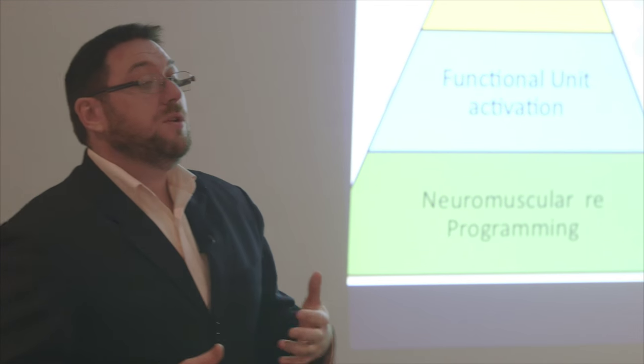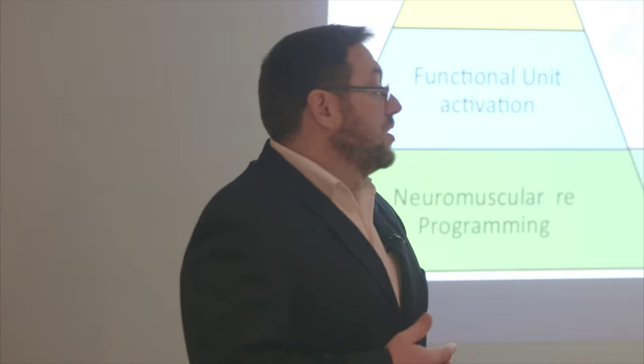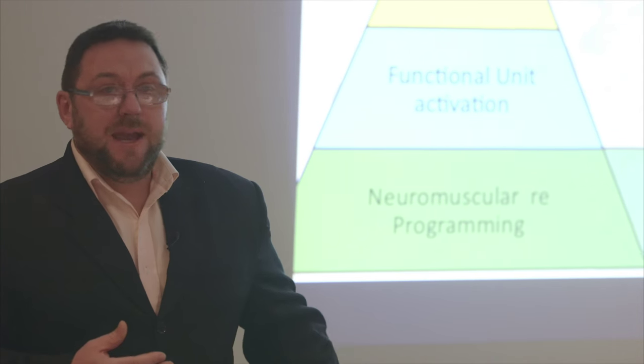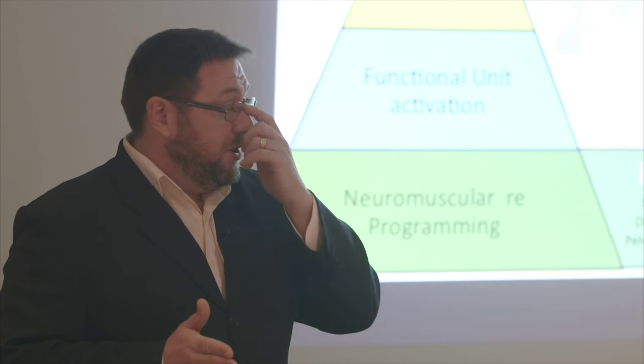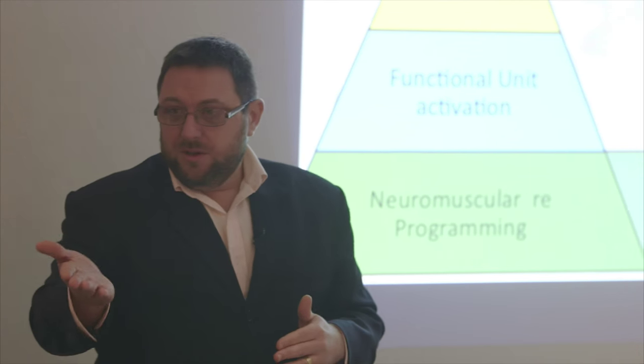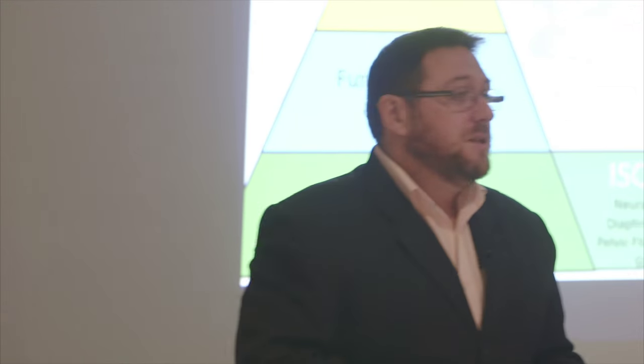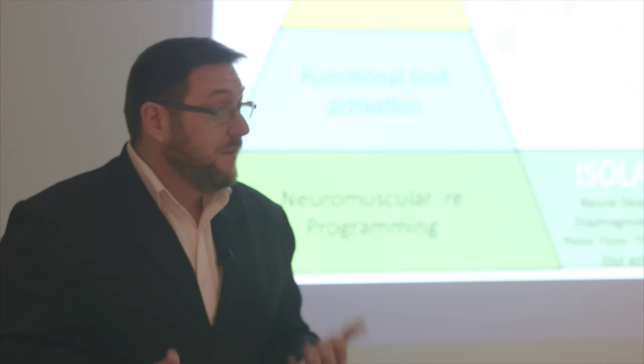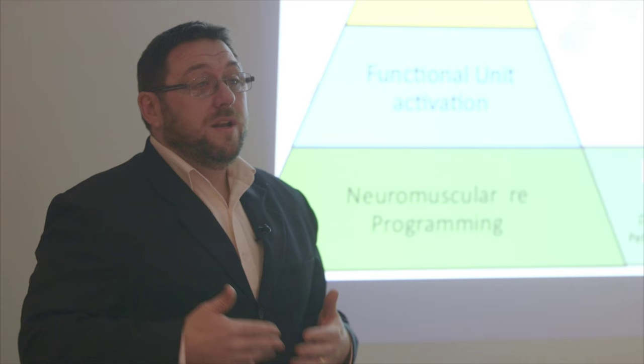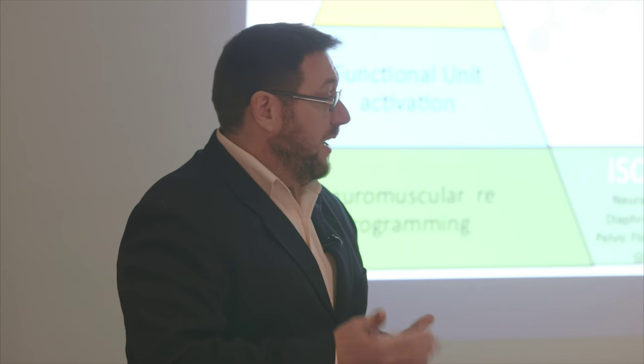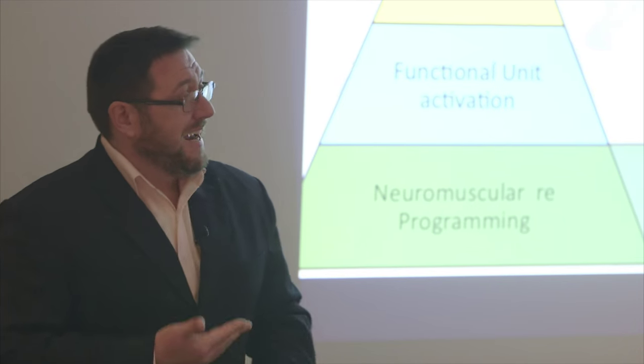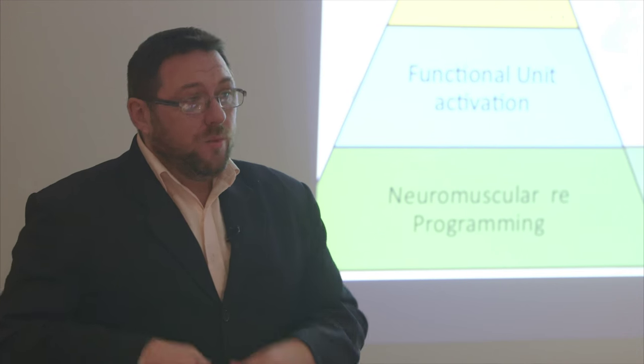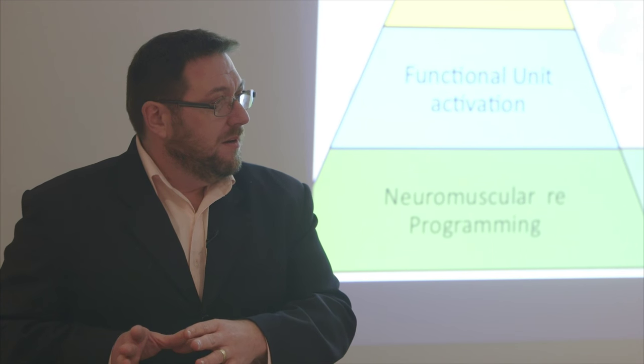For example, if someone's got sciatic pain, a lot of the time they will get that sciatic pain treated. But no one actually works out why they've got the sciatic pain in the first place. So I can use you as an example. Stuart gets lower back pain and he has an uneven leg length. Now he may have gone and seen allied health professional after allied health professional who treated the symptoms of the lower back, but it wasn't until someone actually corrected his leg length that we could actually stop the pain.